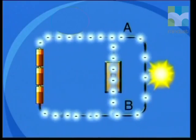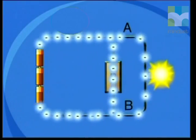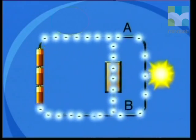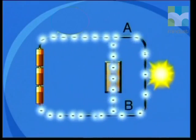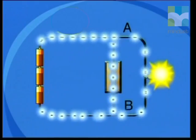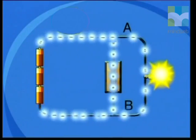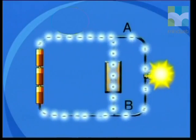At point A, the total current splits up, travels down different paths, and then rejoins at point B. Now let's join Bruce as he investigates how voltage behaves in a parallel circuit.